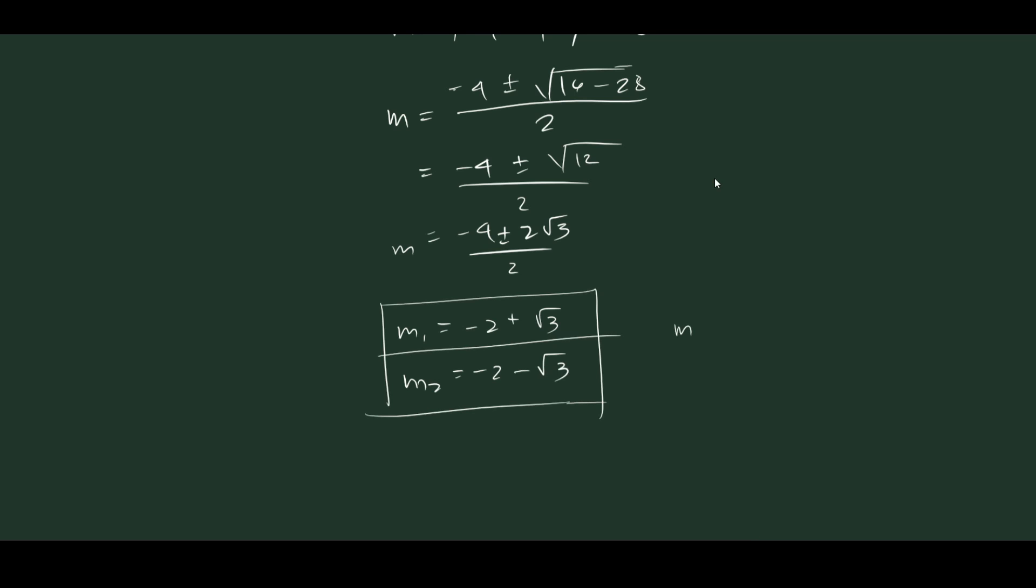So let's review the format of this root. We have alpha plus minus beta i.